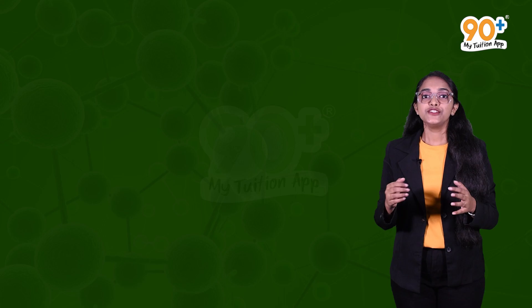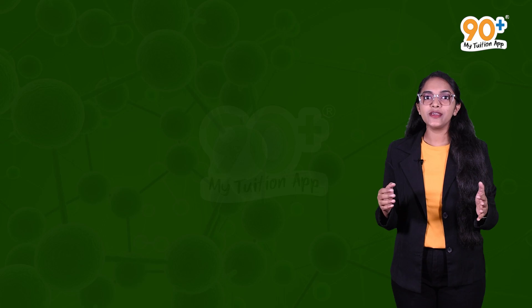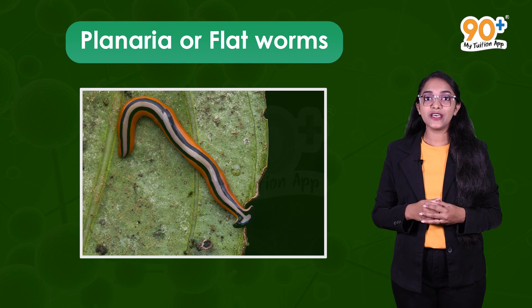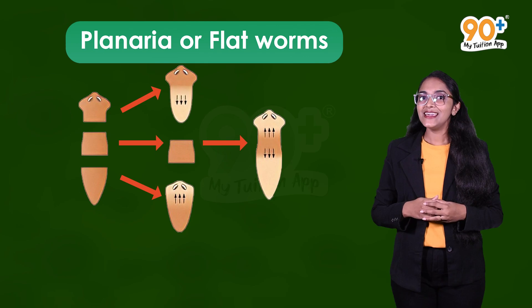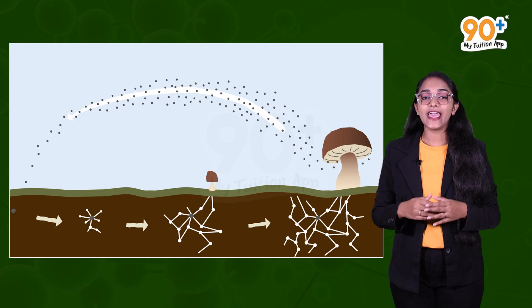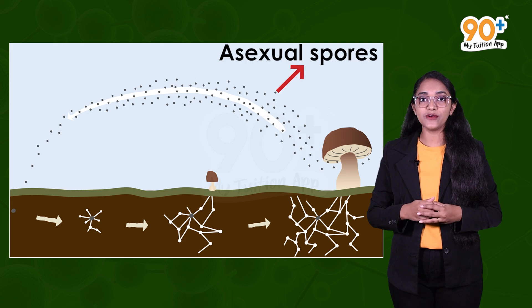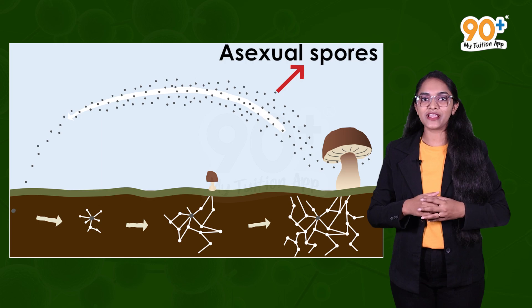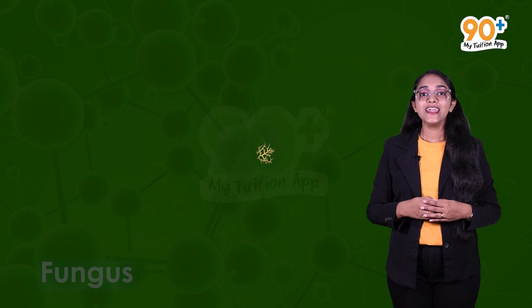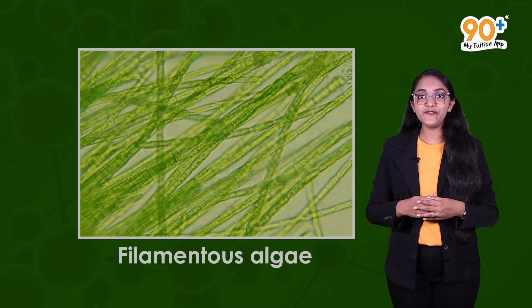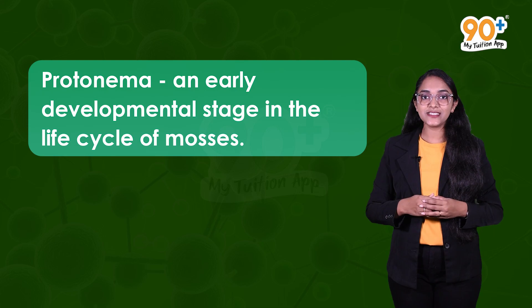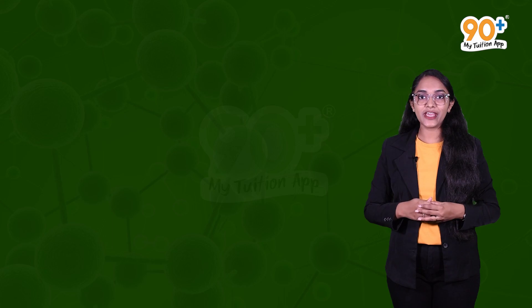In the animal world, we have the planaria or flatworms, which have the ability to regenerate their lost body parts into a new organism — a type of asexual reproduction. In fungi, specialized reproductive structures produce asexual spores that later develop into new organisms. Fragmentation is another mode of asexual reproduction, where fragments of the parent plant develop into a new organism. This can be observed in the protonema of mosses and filamentous algae. Protonema is the early developmental stage in the life cycle of mosses.